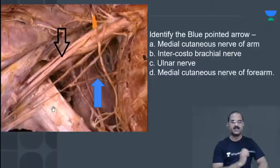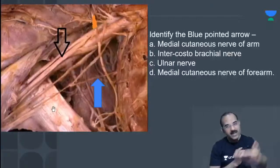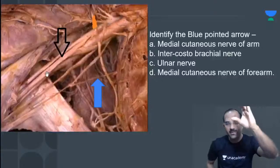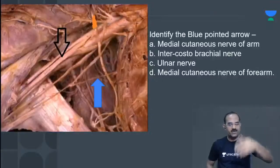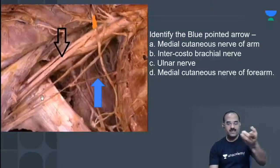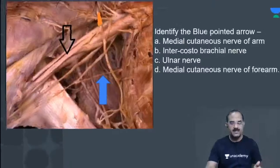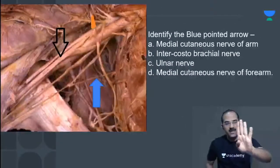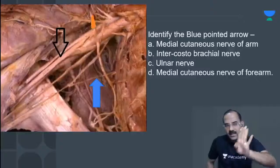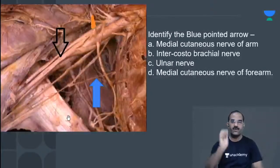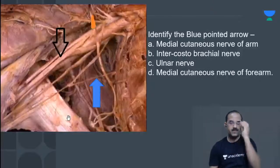This muscle is behind the artery, forming the posterior wall of the axilla. When you see such a shiny tendon, it is the latissimus dorsi. The latissimus dorsi becomes a very flat, shiny tendon as it inserts into the floor of the bicipital groove. This is the tendon of latissimus dorsi.